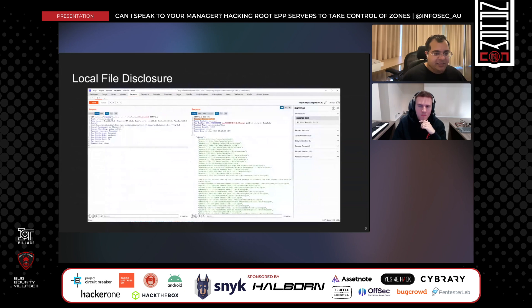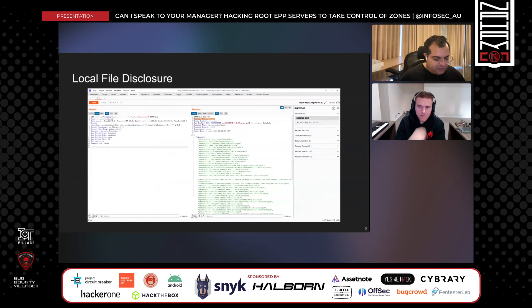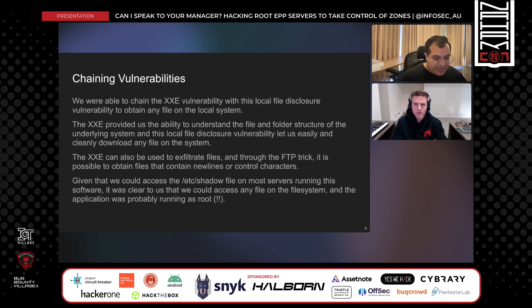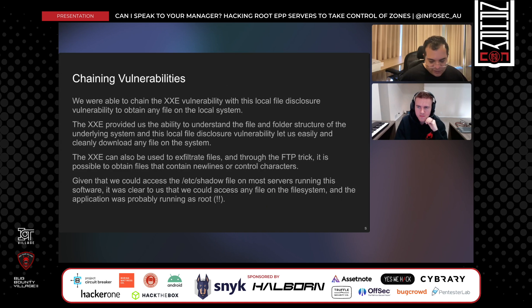The local file disclosure was clearly just returning the contents of any file we requested. This is also where a huge part of the collaboration came into play — after discovering this vulnerability, it was passed off to ZLZ, Reese, and Brett, who did a lot of the post-exploitation work to escalate it into something much more significant. We were able to chain the XXE vulnerability with the local file disclosure to obtain any file on the system. Quite surprisingly, we were even able to obtain the /etc/shadow file, which means the application is running as root — quite terrible. Using the FTP trick with XXE, you can also read files with newlines or read directory contents, giving us a really solid understanding of the entire file system.